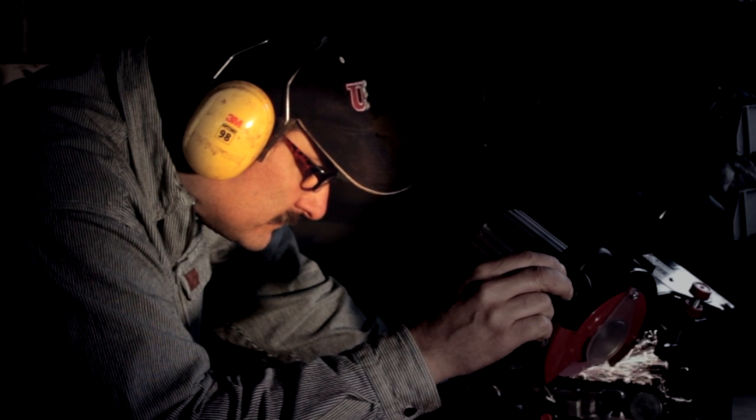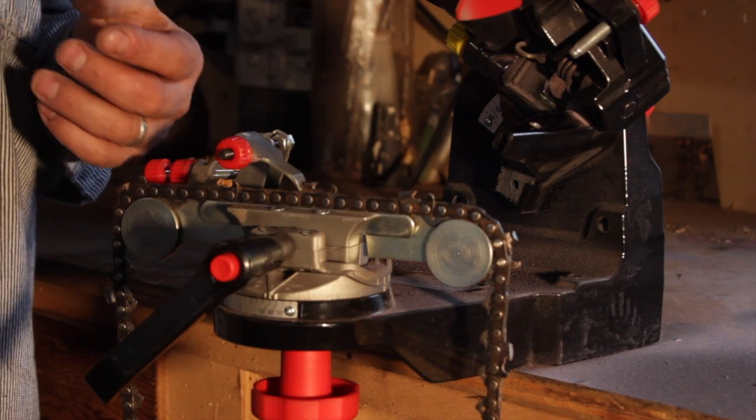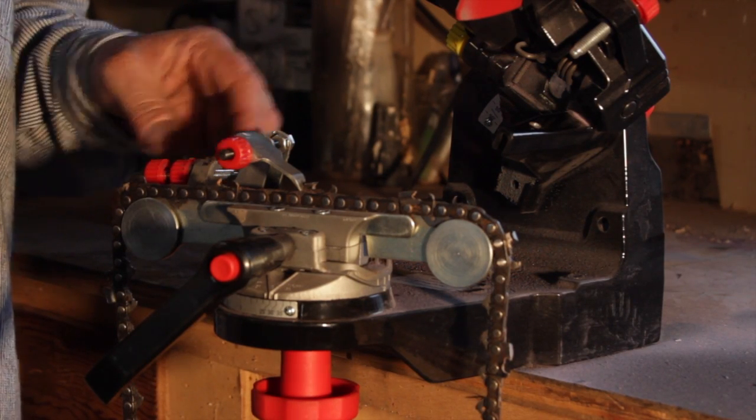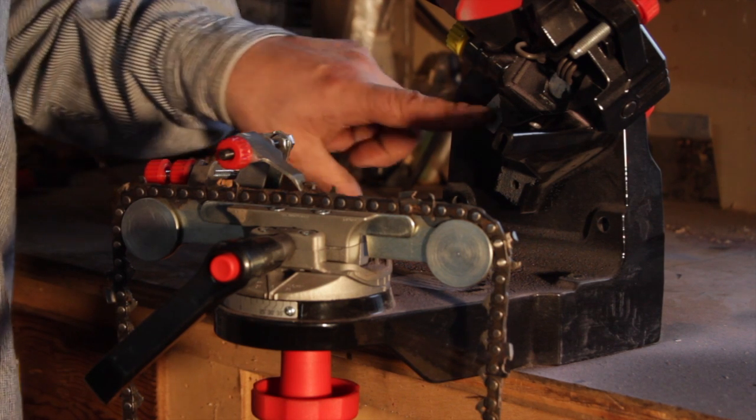After that, you want to set the proper angles for your chain. The undercut angle, which is this one on the arm, I set that at 60 degrees. I find that I have best results at 60 degrees.